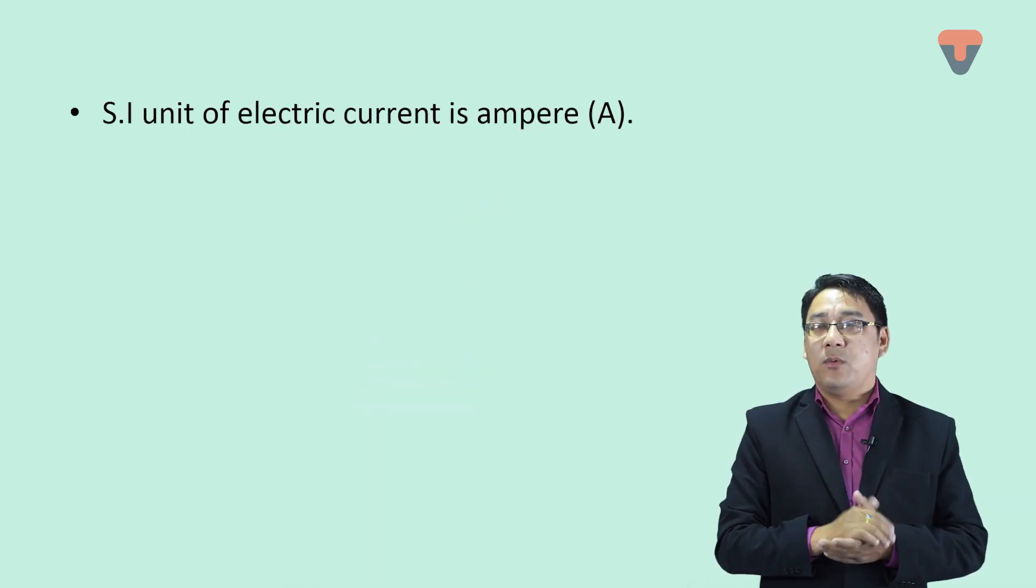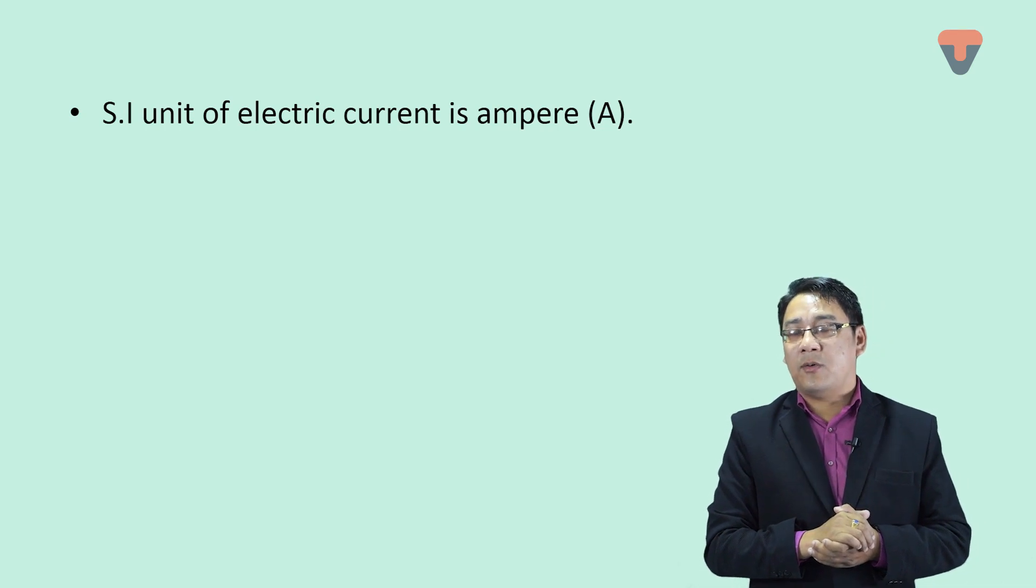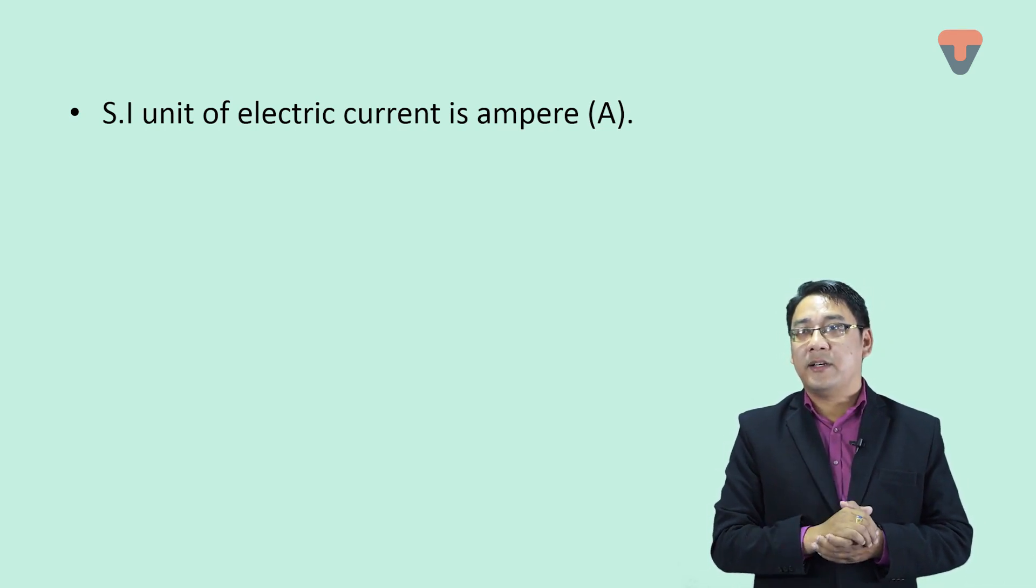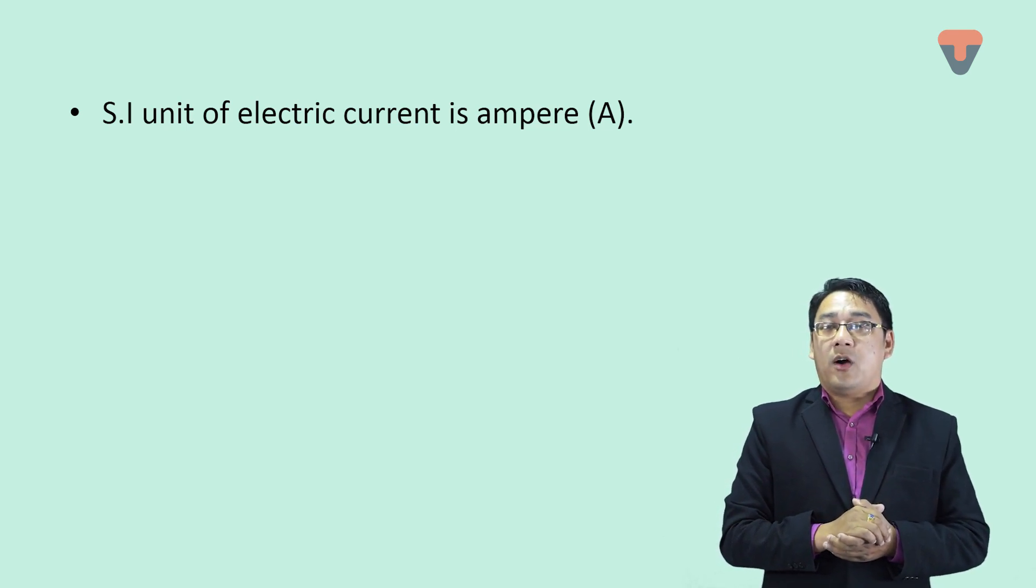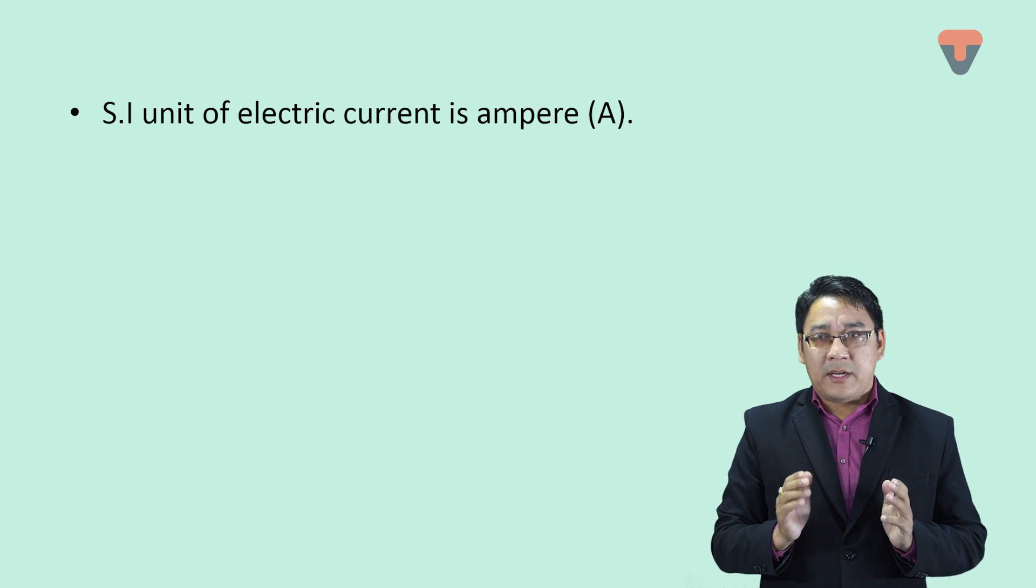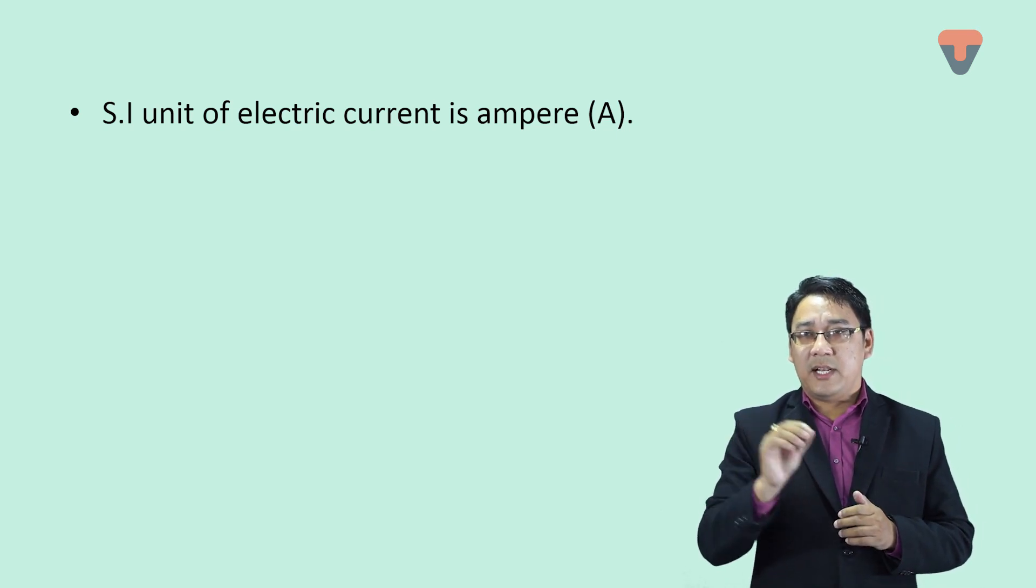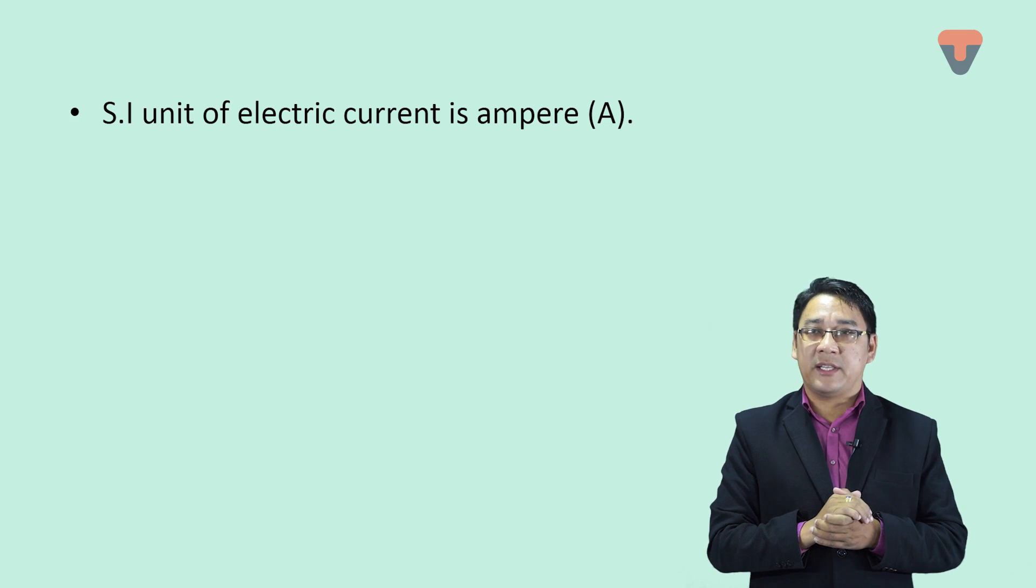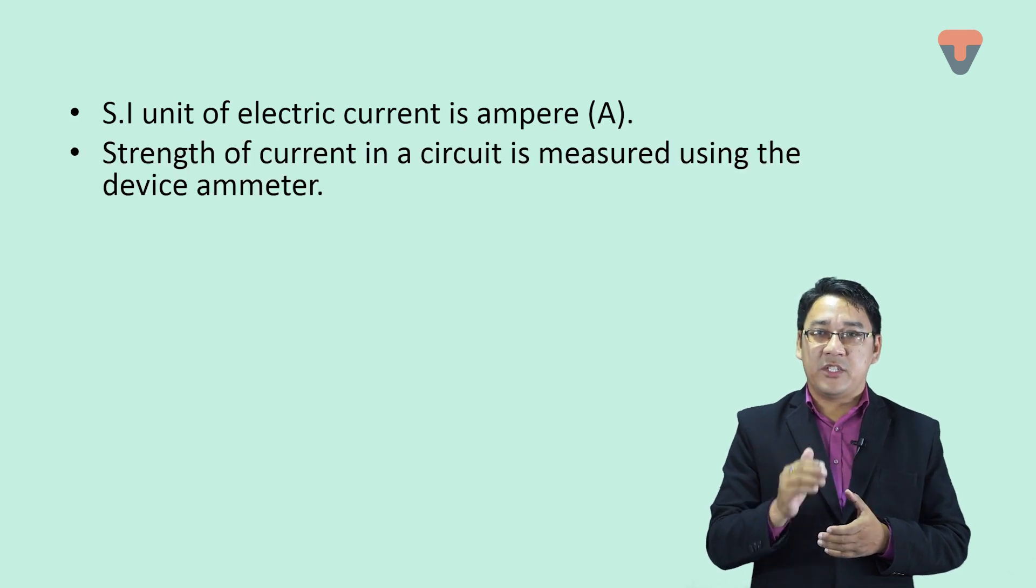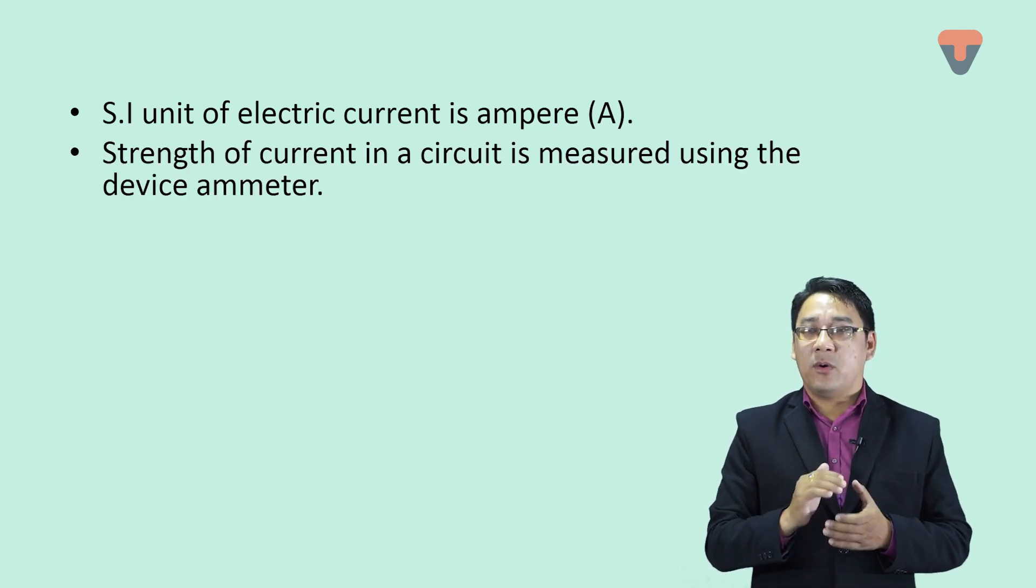Let's see what is the SI unit of electric current. The SI unit of electric current is ampere, symbol capital A. The strength of current in a circuit is measured using the device we call ammeter.